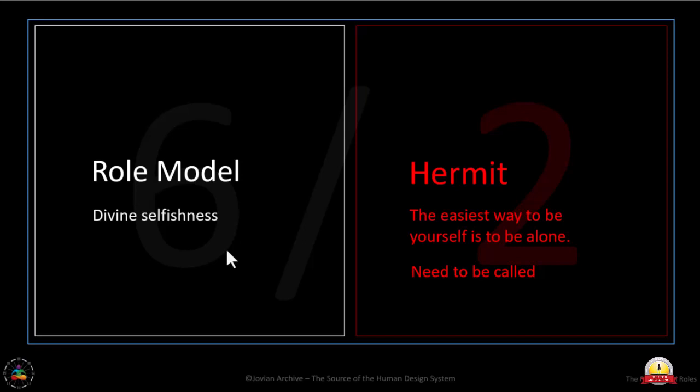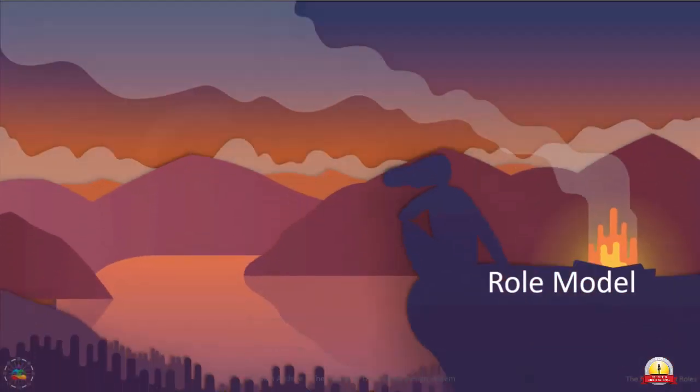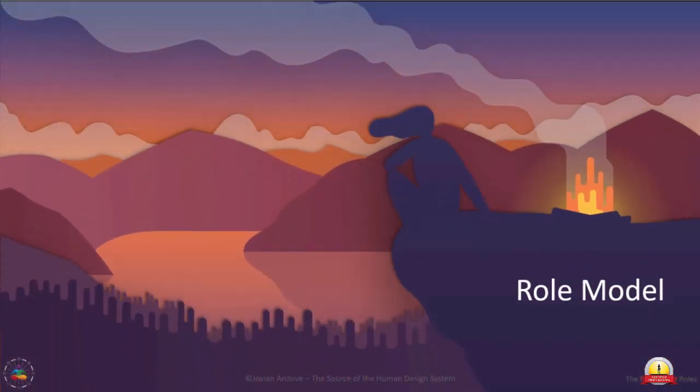You don't have to try and figure it out. Just observe — you may see them in their divine selfishness. Ra calls them the most profound word-of-mouth marketers that ever existed, demonstrating the model. This role model — he would tell the story, one of his favorite stories — illustrating the difference of the transition from the fifth line, heretical seduction, to the six-line role model.